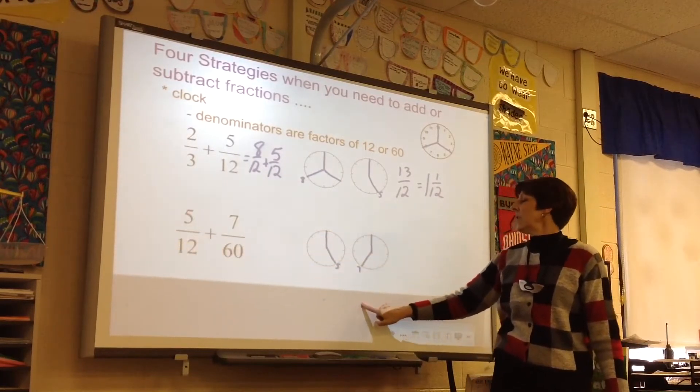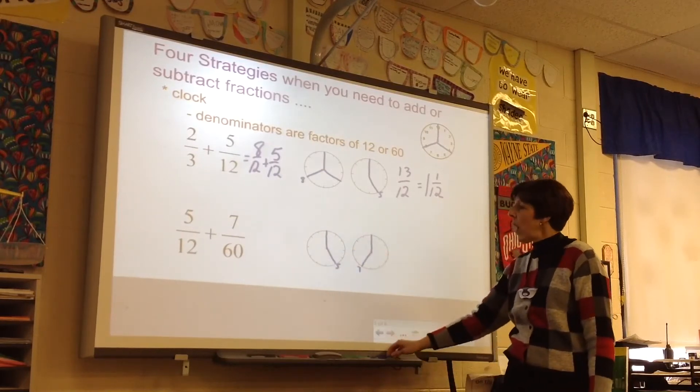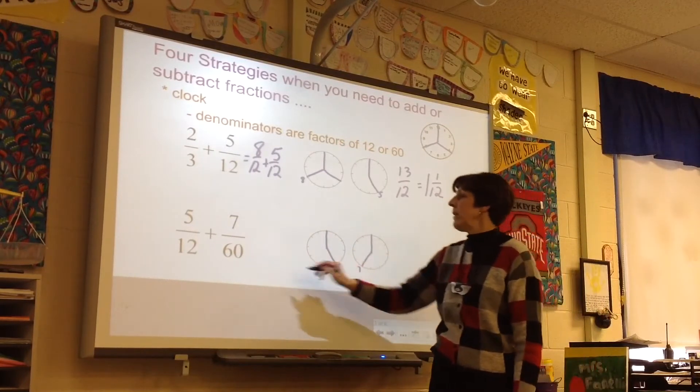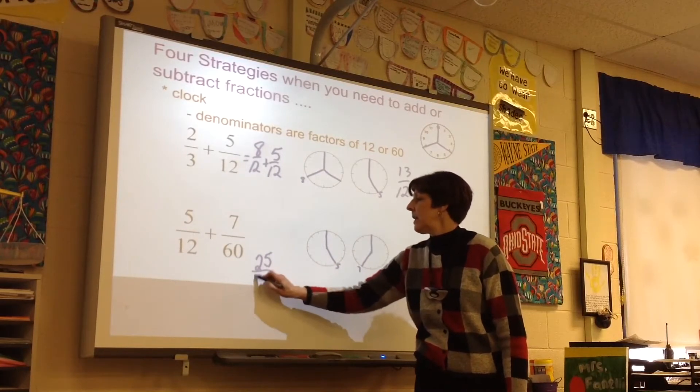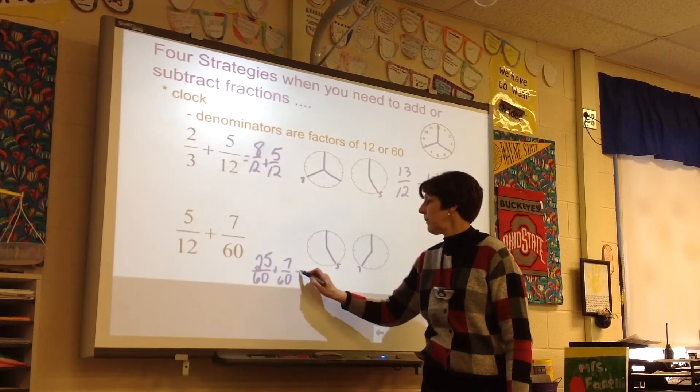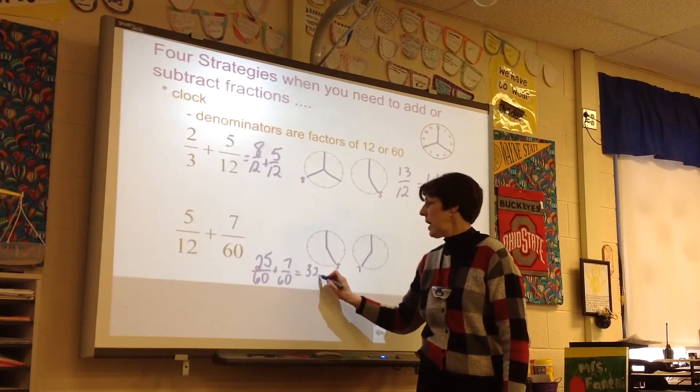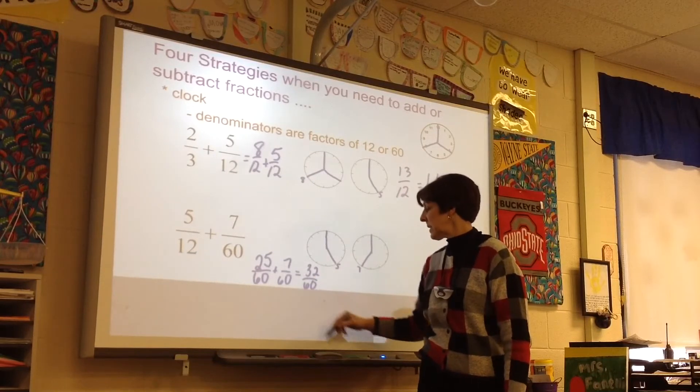Secondly, when you're thinking of sixtieths, think of minutes on a clock. 5 twelfths would be 25 minutes out of 60, plus 7 sixtieths. That would be 32 sixtieths.